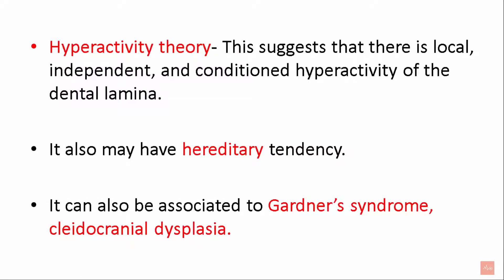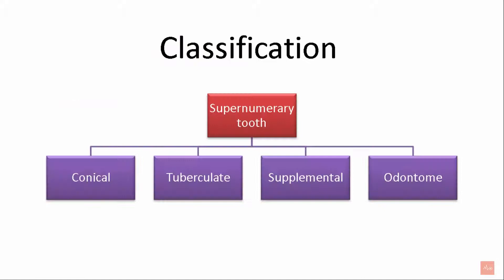Let's look into the classification of supernumerary teeth. There are four types: conical, tuberculate, supplemental, and odontome.